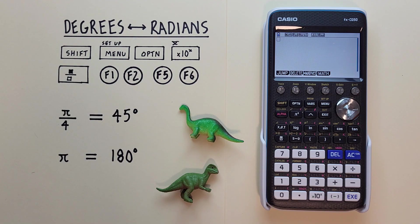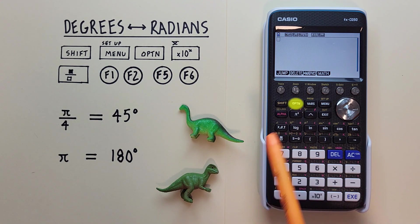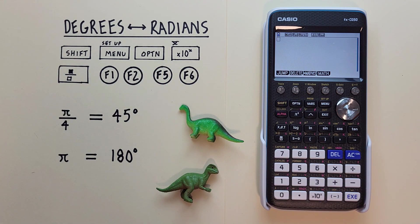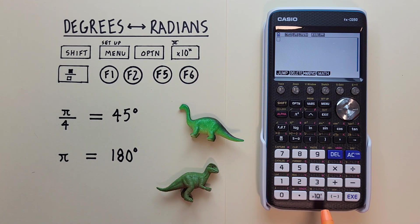The Option key that looks like this, located here. The Times 10 to the X key with the Shift function of Pi that looks like this, located here.